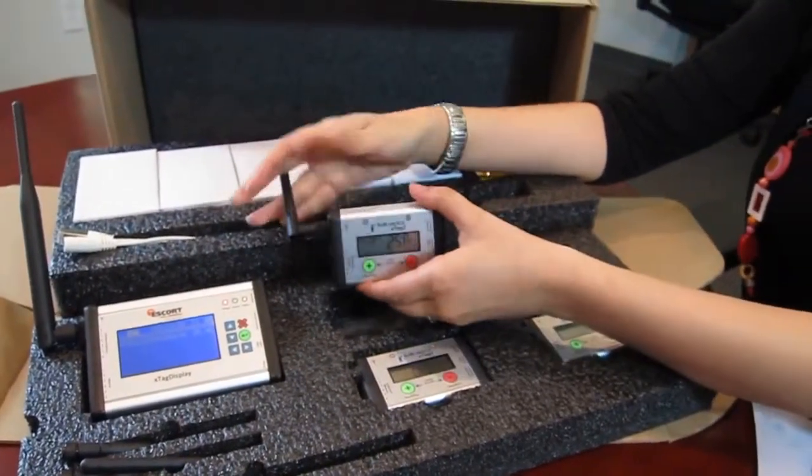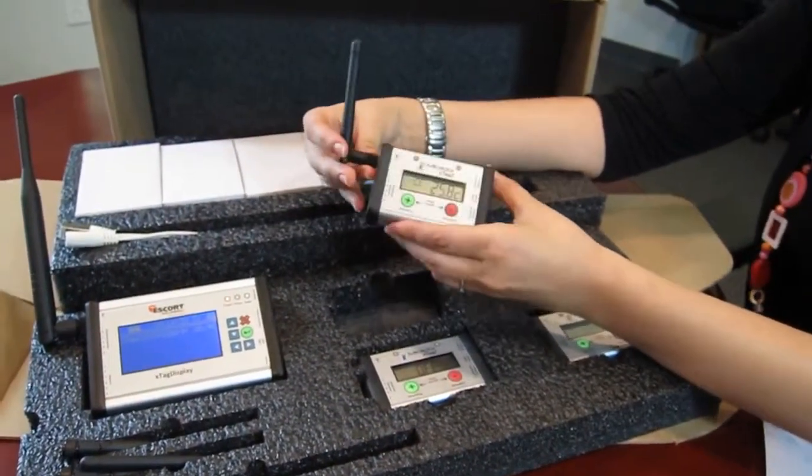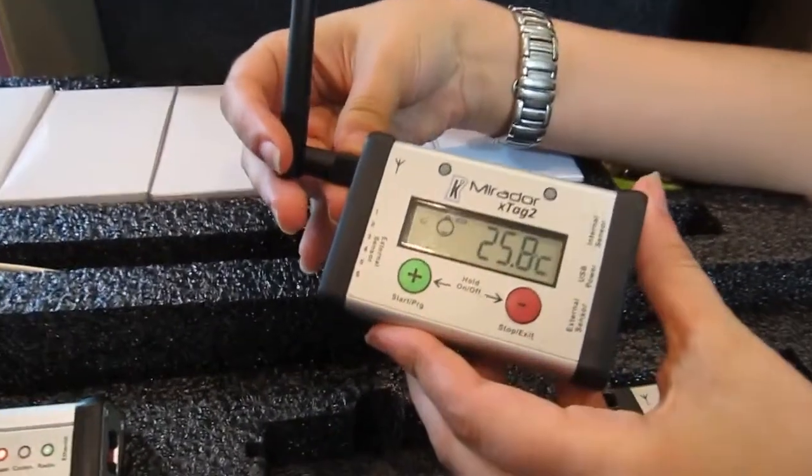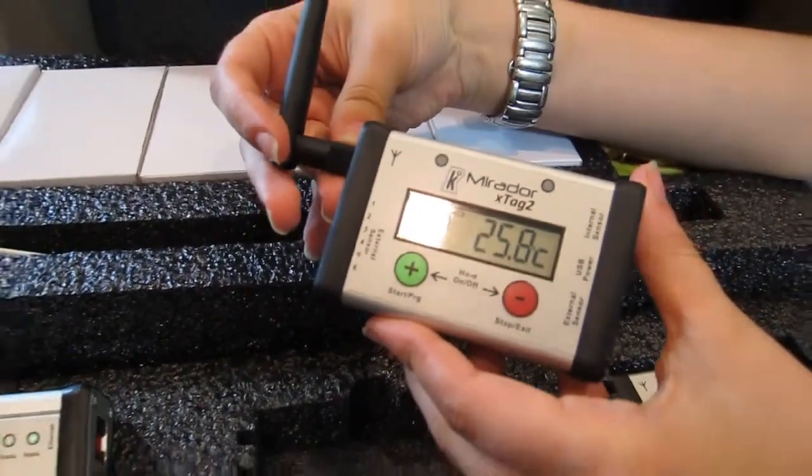It uses the X-Tag Display and the X-Tag Tube that you see right here. How it works? This little wireless sensor is going to record temperature inside your warehouse, your fridges, your freezers or any other thermal equipment that you might have.